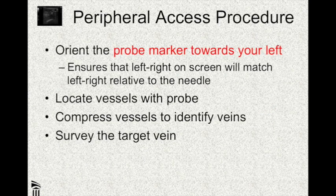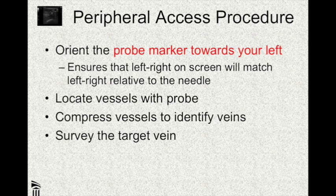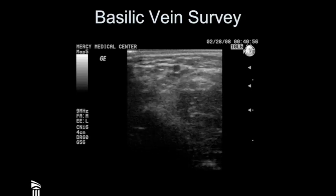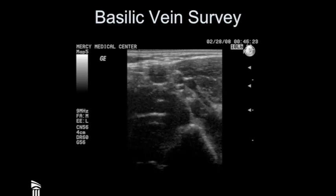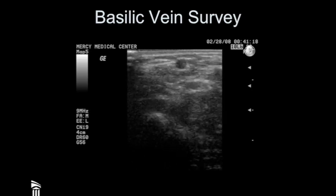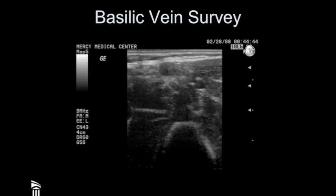Make sure the probe marker is oriented to your left — that ensures what you see on screen has the same left-right orientation as the real world. Locate the vessel with your probe, compress it to make sure it's a vein, and then survey that vein by running up and down the arm. You want to know where it's the biggest and most shallow — that's how you pick your target. This is an example of a basilic vein: you can see it starts very small, goes from side to side, and then goes pretty big, so you'd want to choose a good spot to hit that vein.